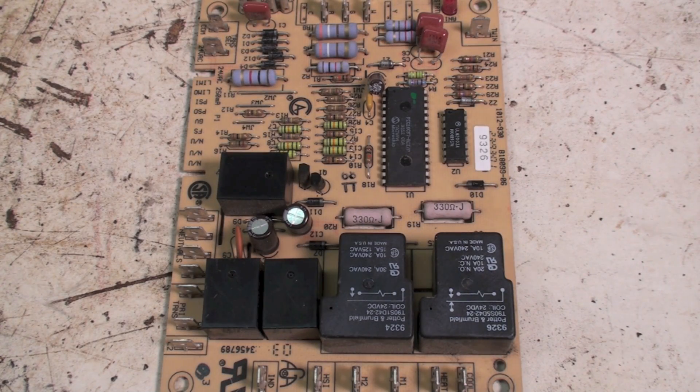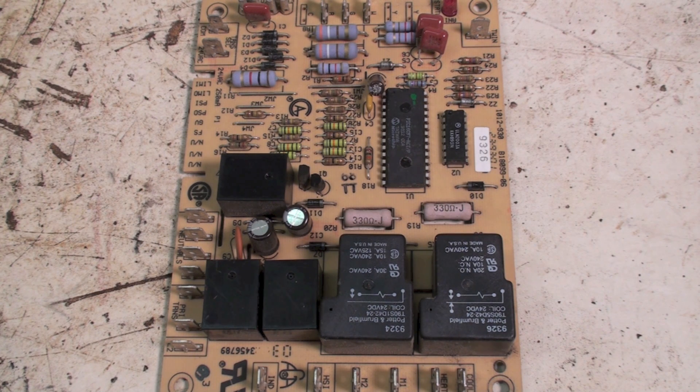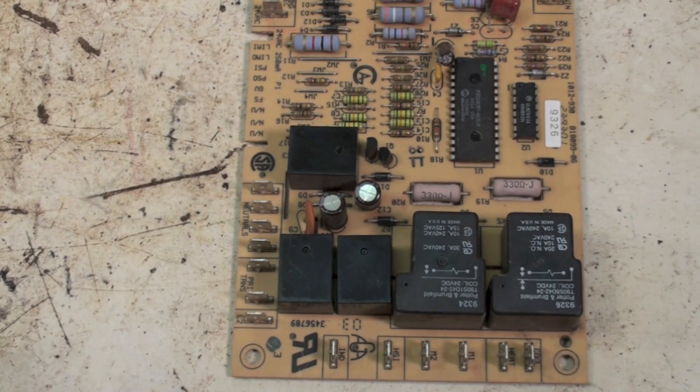Before we do any motor speed changes, be sure you've cut your power from the furnace. When you took the furnace door off it should have shut it off with the door switch, but they're not always hooked up. So make sure your power is off. Here we've got an IFC and the fan motor wires are hooked here.